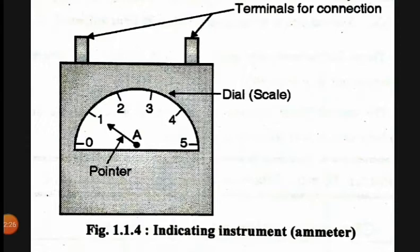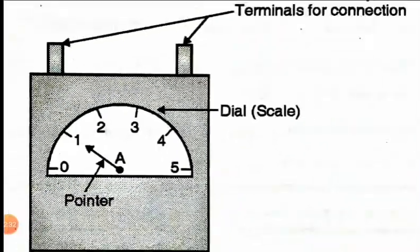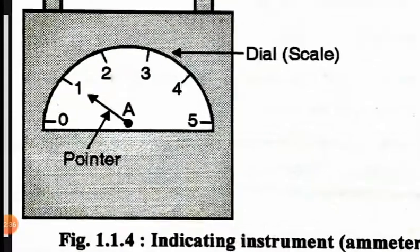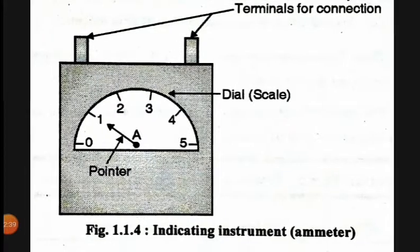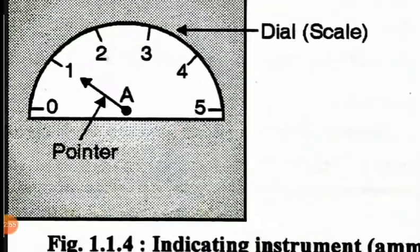This is the ammeter. There are two terminals for connection: positive and negative. This is the dial and scale, and this is the pointer. To measure current, we use this instrument. The indicating instrument indicates the magnitude of the quantity to be measured. The indication is generally in the form of a scale, dial, and pointer arrangement.